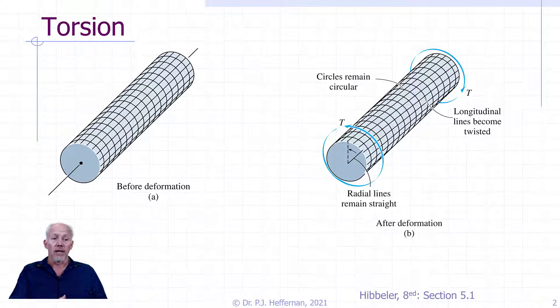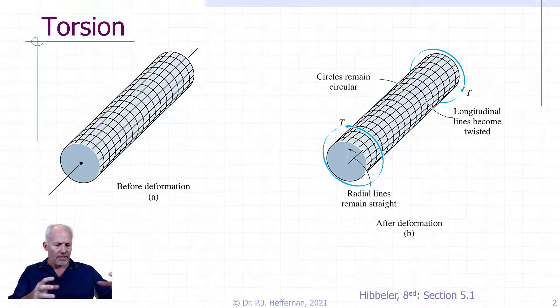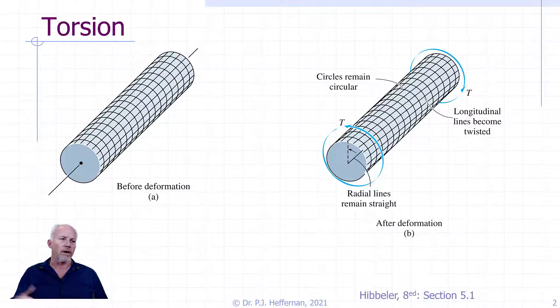The longitudinal lines, on the other hand, which form the grid, twist into a helix that intersect the circles at equal angles everywhere along it. You have these regular angles of twist as you are moving away from the support.